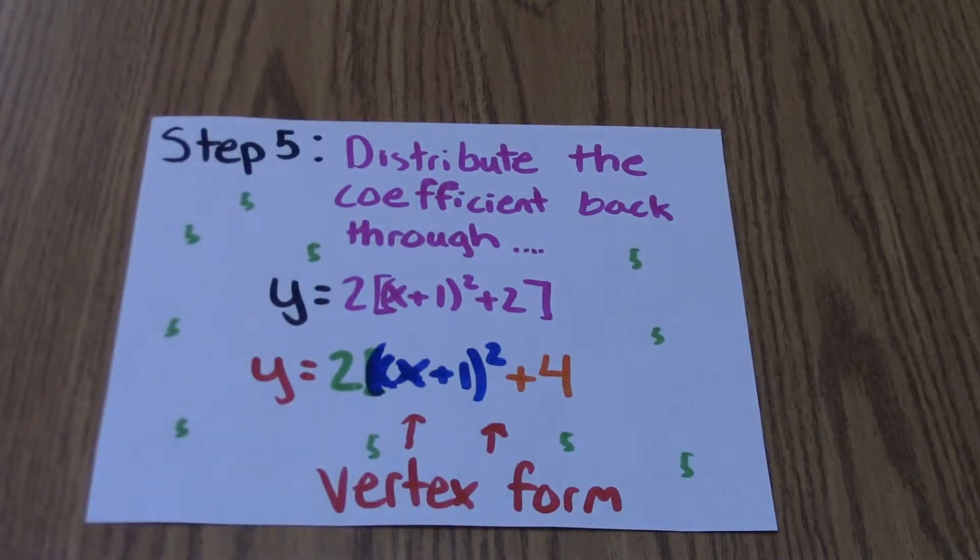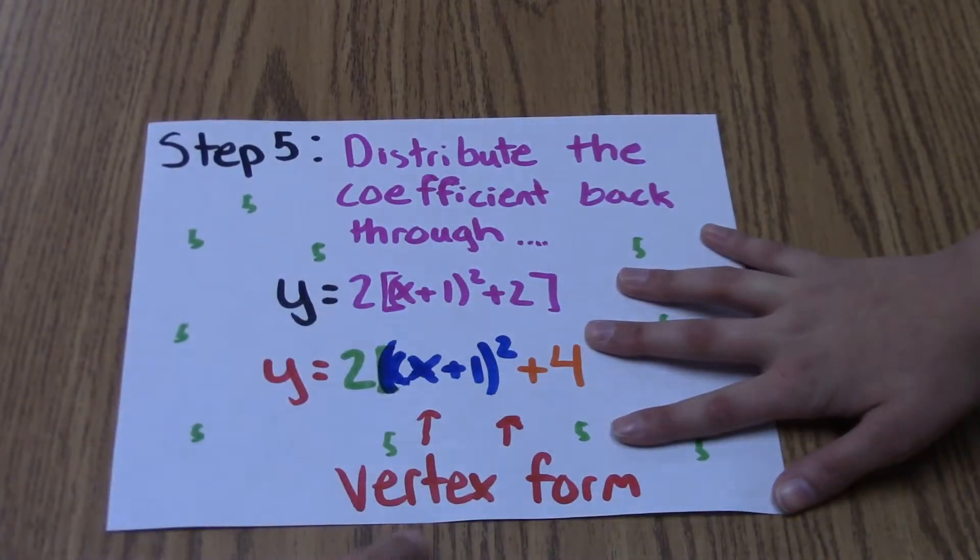Step 5. Distribute the coefficient back through. We end up in the vertex form.